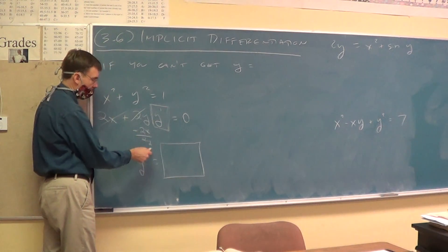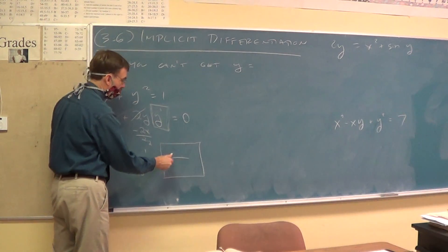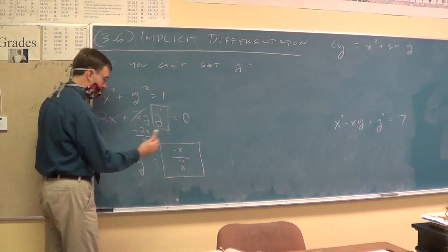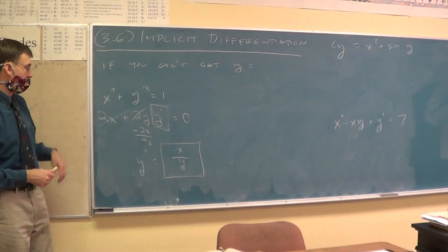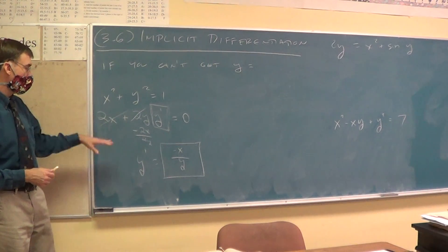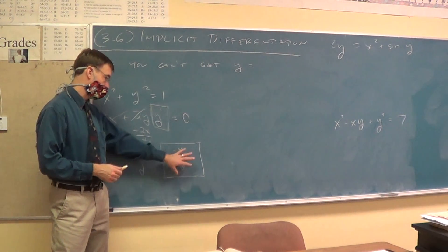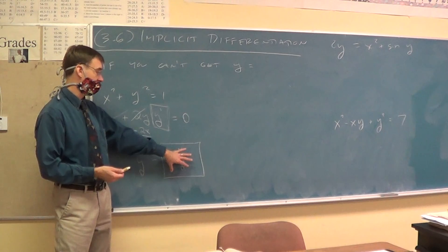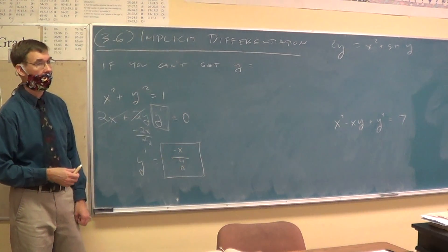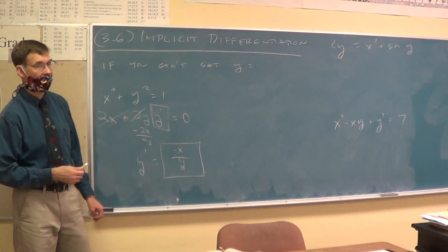Instead of negative 2x on top of 2y, negative x on top of y, cancel the 2, so we're good. So, previously, all your y derivative answers had only x's in them. Now they have x's and y's, and we're okay with that. Question about that concept?